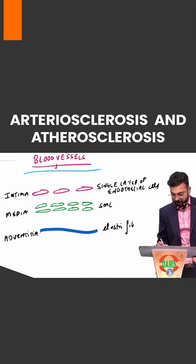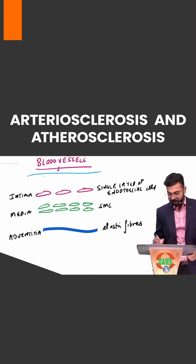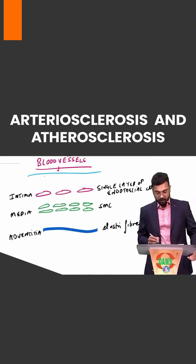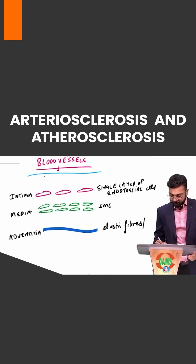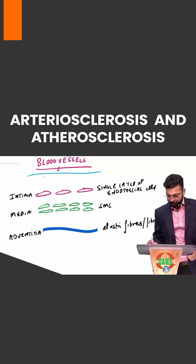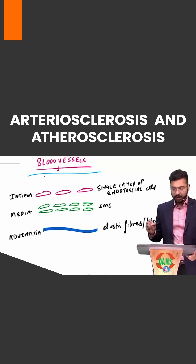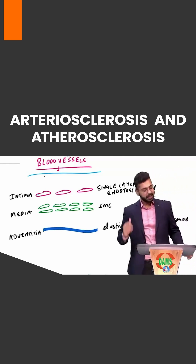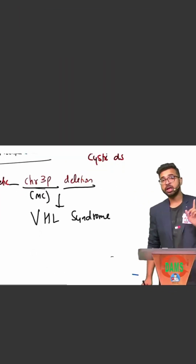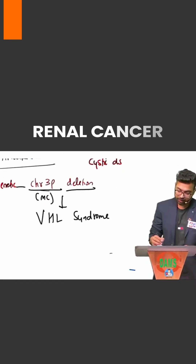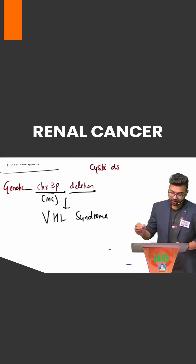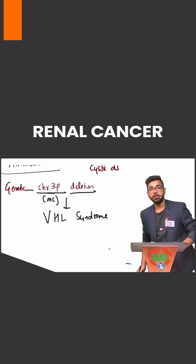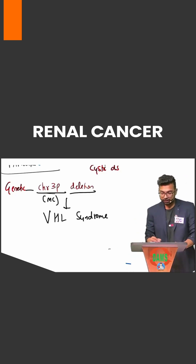Fibrocollagenous tissue, or Elastin Fibers — also written as Fibrocollagenous Tissue. Now, the question comes: you know that VHL syndrome occurs because of a triploid lesion, and which variant is most common in VHL syndrome?